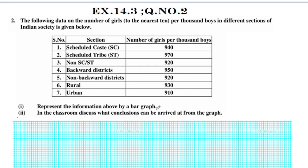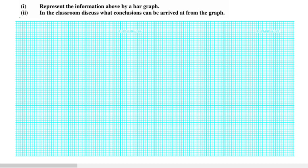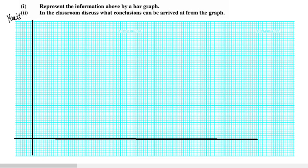To draw the bar graph, we have a horizontal line with the number of girls on the vertical axis. We have a scale on the Y-axis, and the X-axis represents the sections. One unit is equal to 10 on the scale.